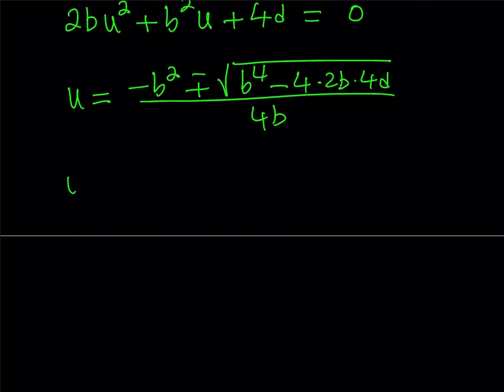Okay, let's go ahead and simplify this, and then we're going to write them separately. So, we get negative b squared, plus minus, this gives me b to the fourth power, 4 times 2 times 4 is equal to 32bd, and then all over 4b.